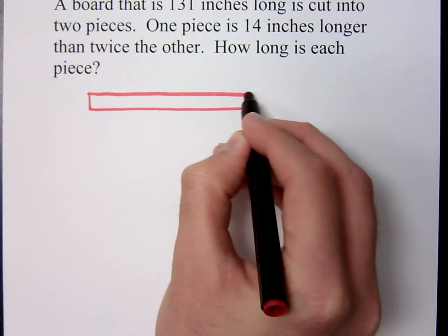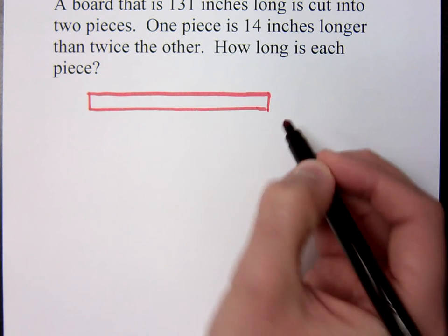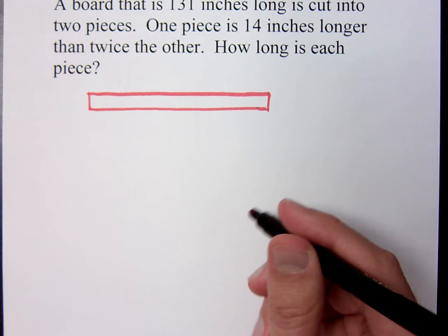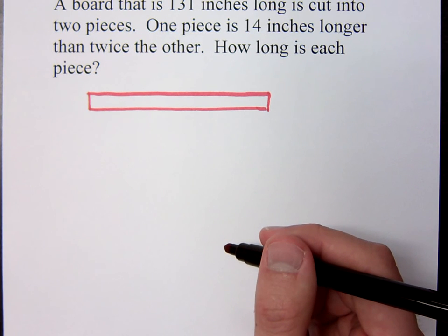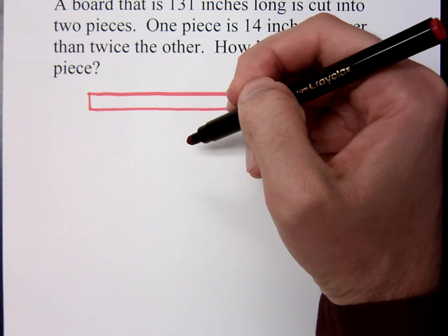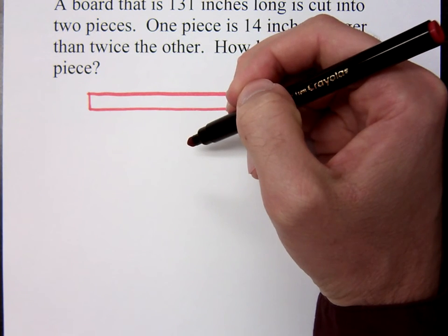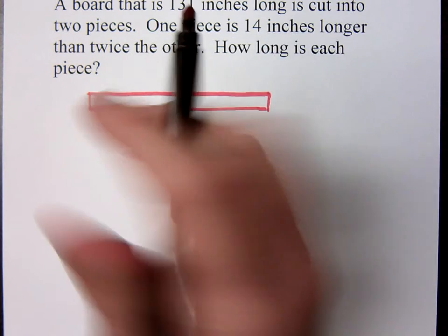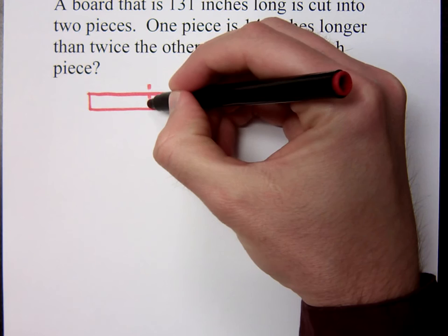This doesn't need to be perfect. And it's just a board. And you're cutting it into two pieces. Now does it say two equal pieces? No. If you cut it right down the middle, that would mean that the pieces would be equal length, but it doesn't sound that way by the way the rest of this is being written. So let's just say we're cutting it right here.